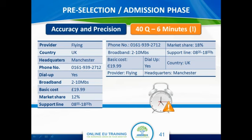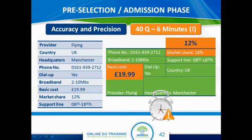For example, if you have two phone numbers, phone number 1 and phone number 2, they might be swapped. In this particular example, we can find two errors. One is market share, which is given on the right as 18%, but is in fact 12%. The other error is basic cost, which was given as 19.99 euros, when in fact it's 19.99 pounds.